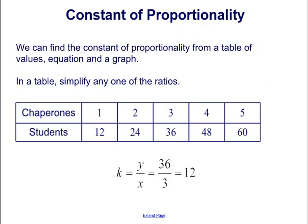So we can find the constant of proportionality from a table of values, an equation, and a graph. In a table, we would simplify any one of the given ratios. So here we have a table where we have the number of chaperones for each of the students that are on a trip. So we can pick any of these ratios, let's think of chaperones as X and students as Y. So we can pick any ratio of students to chaperones to find the constant of proportionality.